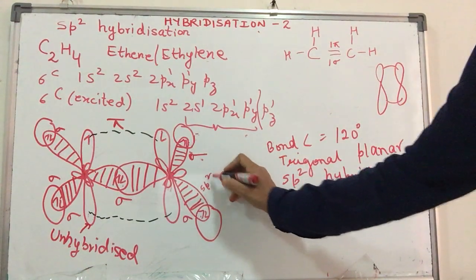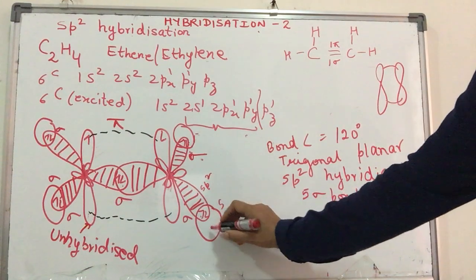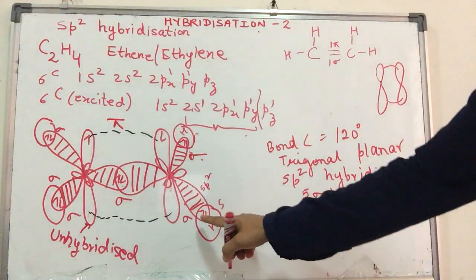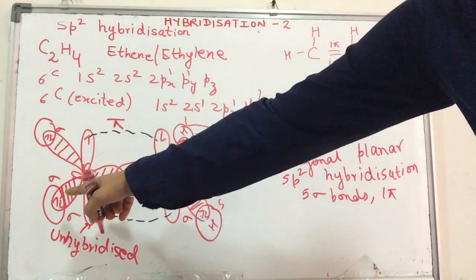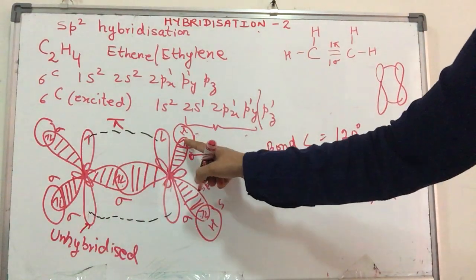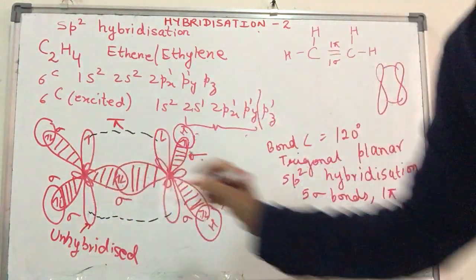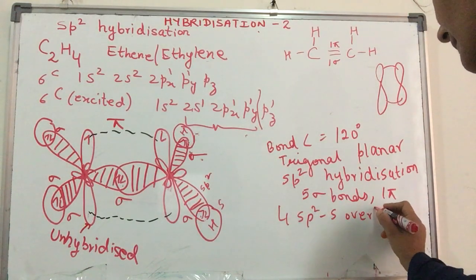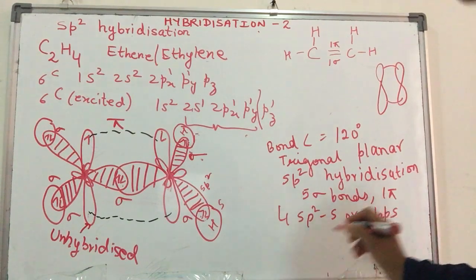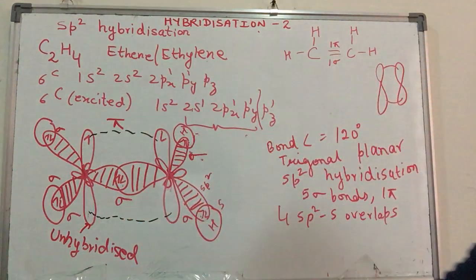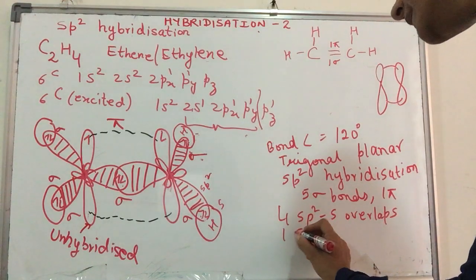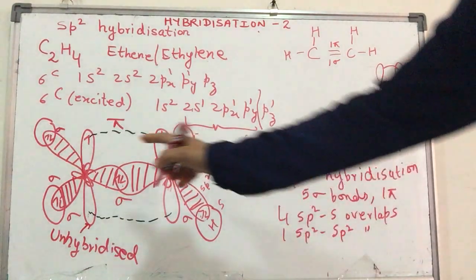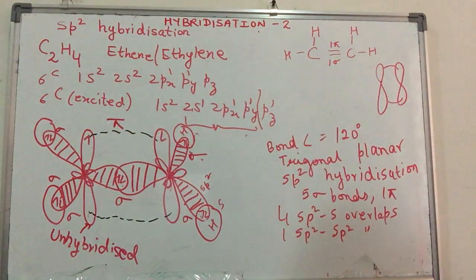This is an sp2 hybrid orbital. This is an s orbital from hydrogen. So I have sp2-s, sp2-s, sp2-s and sp2-s. A total of 1, 2, 3, 4. So four sp2-s overlaps. What is the kind of overlap between the two carbon atoms? I have one sp2-sp2 overlap and of course there is one pi bond over here.